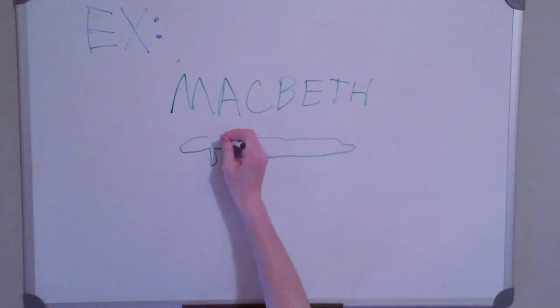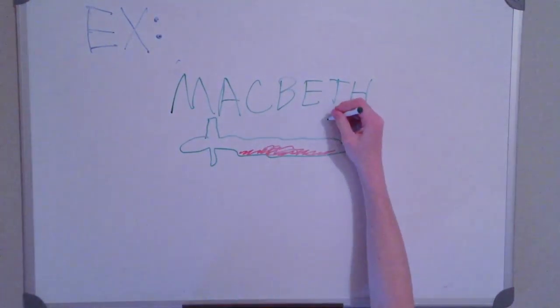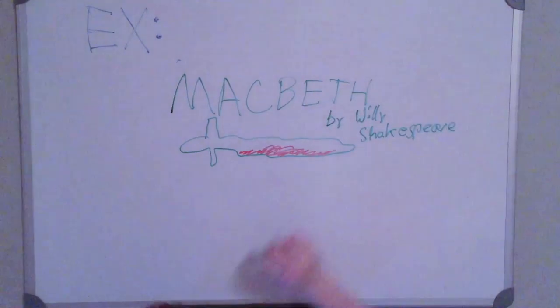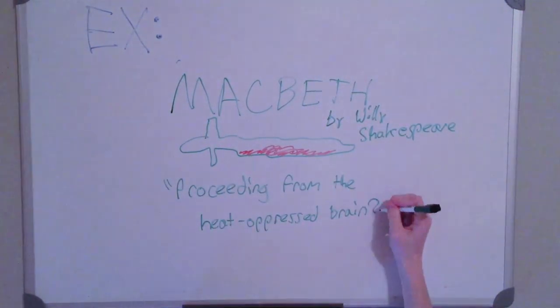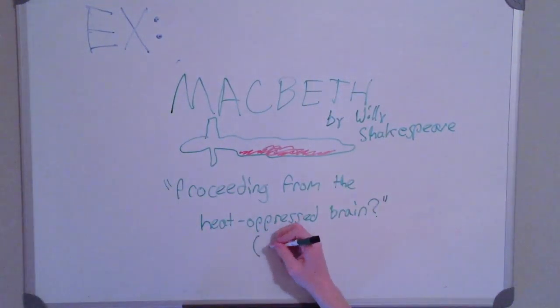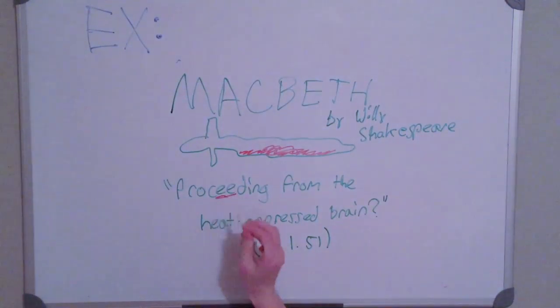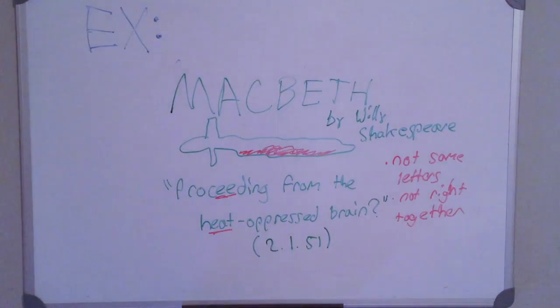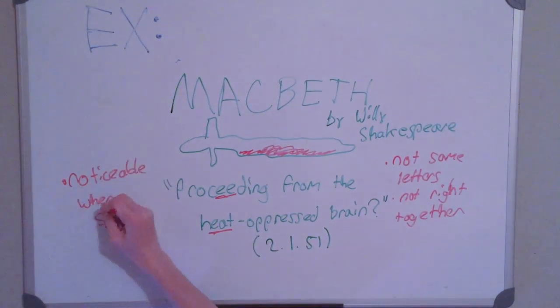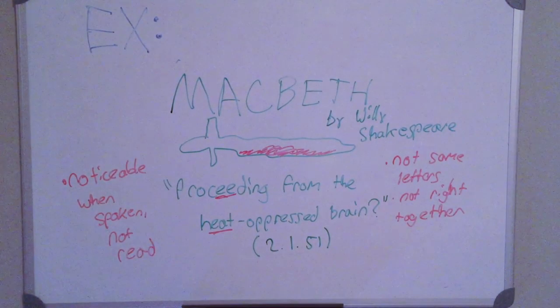Now let's look at Macbeth. In this play, written by William Shakespeare, we have the line: 'Proceeding from the heat-oppressed brain.' In this case, 'Proceeding' and 'heat' have assonance because they have similar vowel sounds. Again, not the same letters, not right together, but it's noticeable when it's spoken.